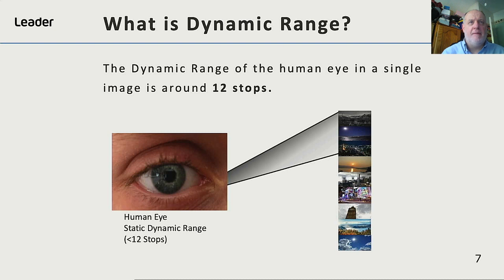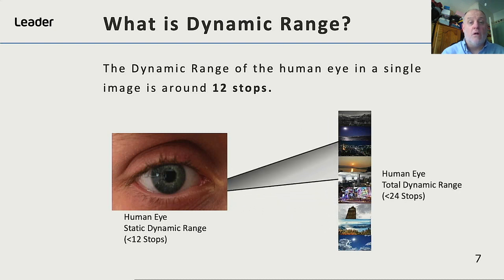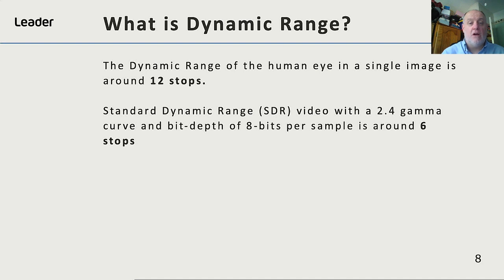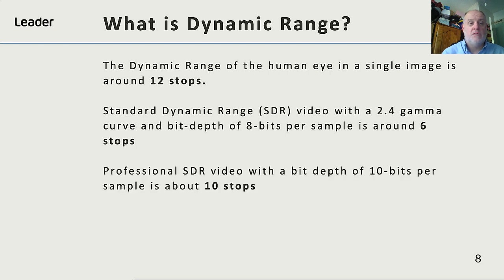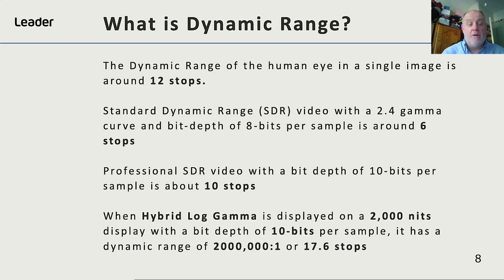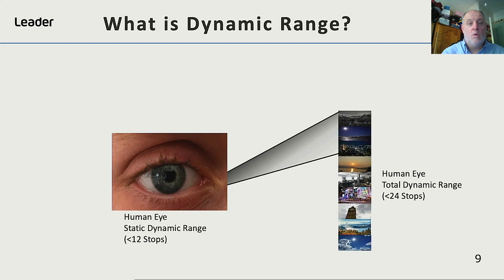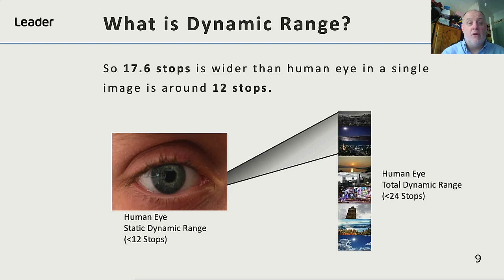The dynamic range of the human eye in a single image is around 12 stops. But the human eye has a built-in iris and different sensors for the darker and lighter parts of the image, so the total dynamic range of the human eye exceeds 24 stops. Standard dynamic range video with a 2.4 gamma curve and a bit depth of 8 bits per sample is around 6 stops. Professional standard dynamic range video with a bit depth of 10 bits per sample is about 10 stops. But when hybrid log gamma is displayed on a 2,000 nit display with a bit depth of 10 bits per sample, it has a dynamic range of 17.6 stops — wider than the human eye in a single image. And that's why HDR is so important.